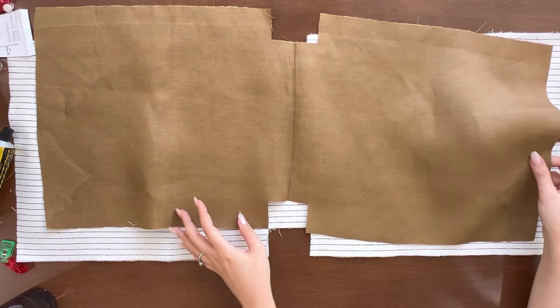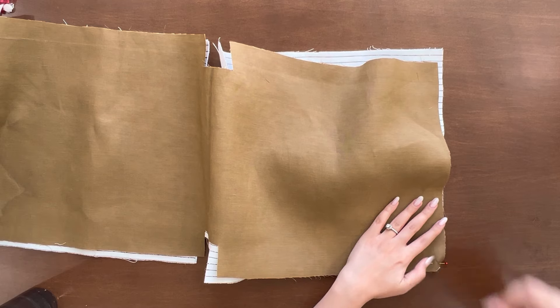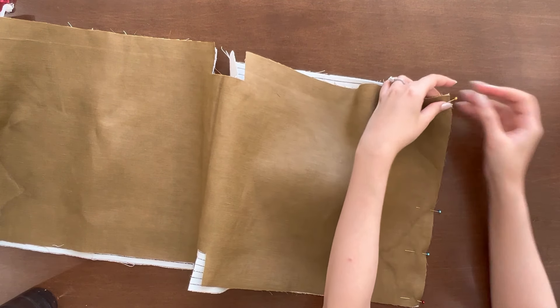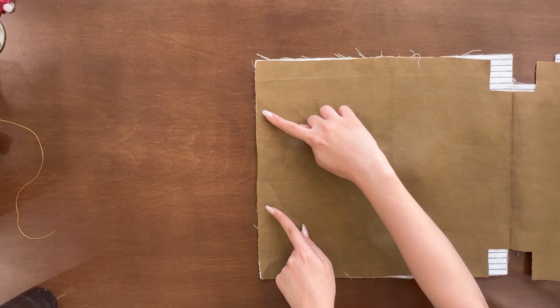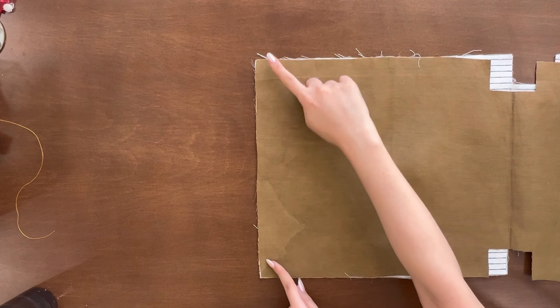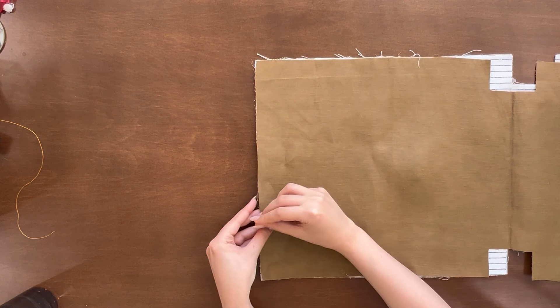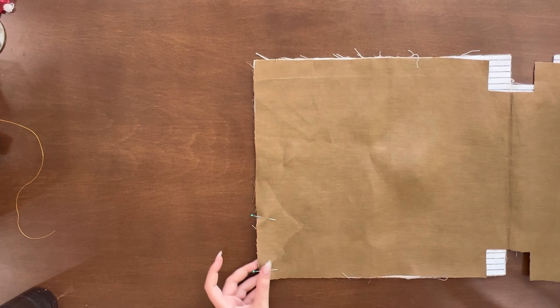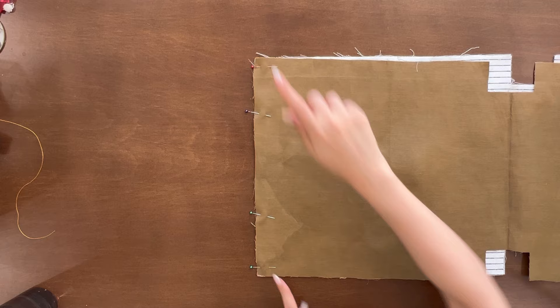Now, take the lining and place it on the main panel right side together and pin both ends. On the side you have buckle connector, just do not sew the middle about 20 cm and pin the rest. You will turn your bag right side out from this area.